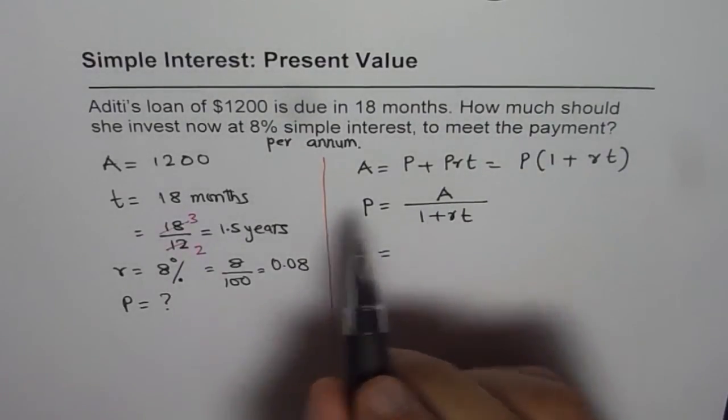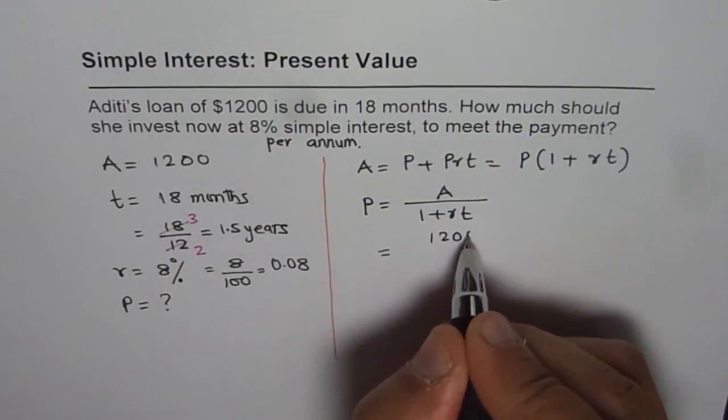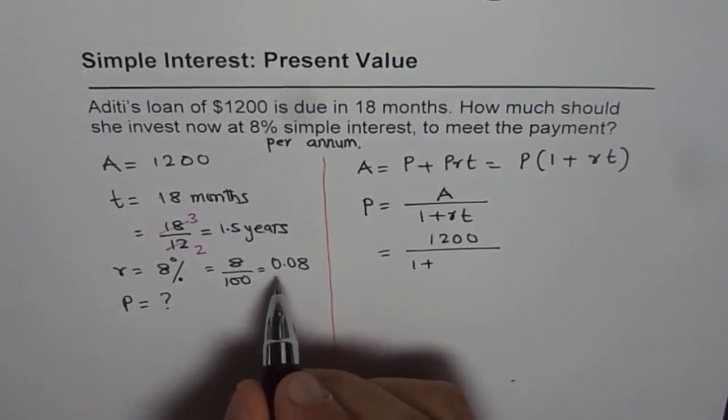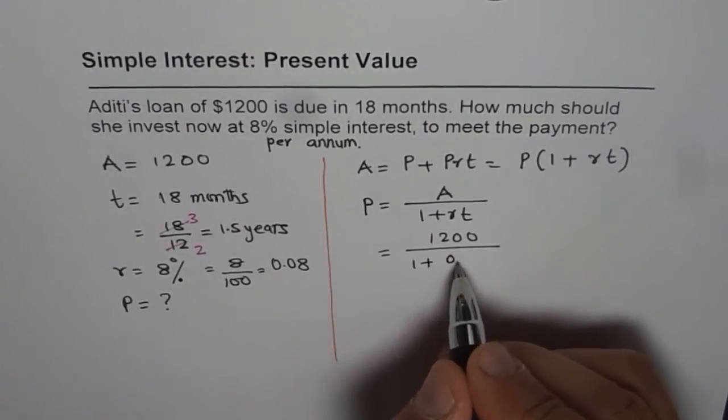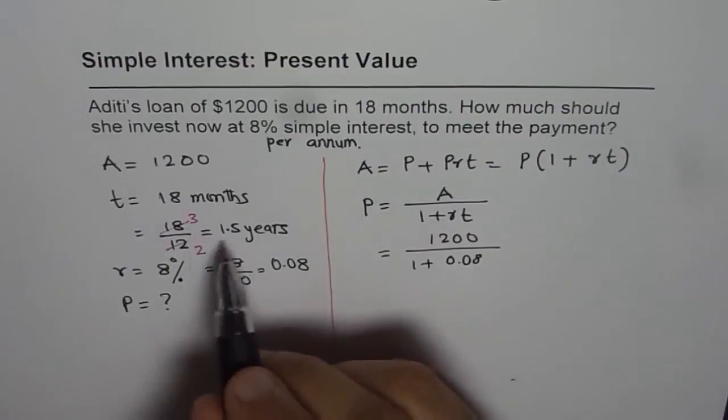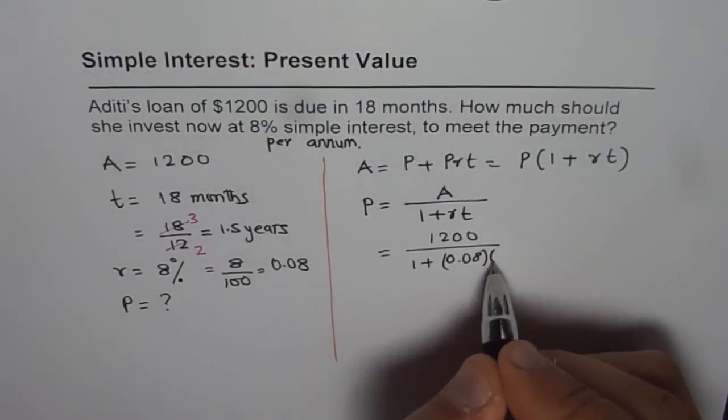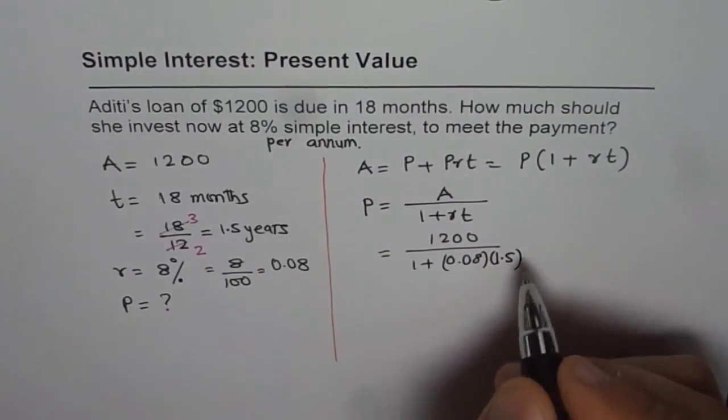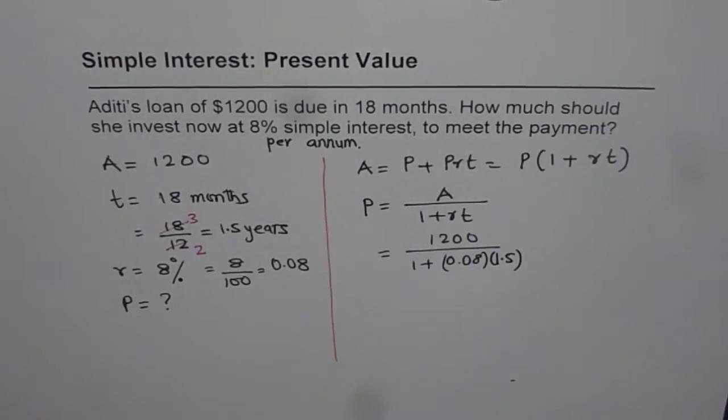Amount which is required is $1200 divided by 1 plus rate of interest 0.08 times time 1.5. We can use the calculator and get the result.